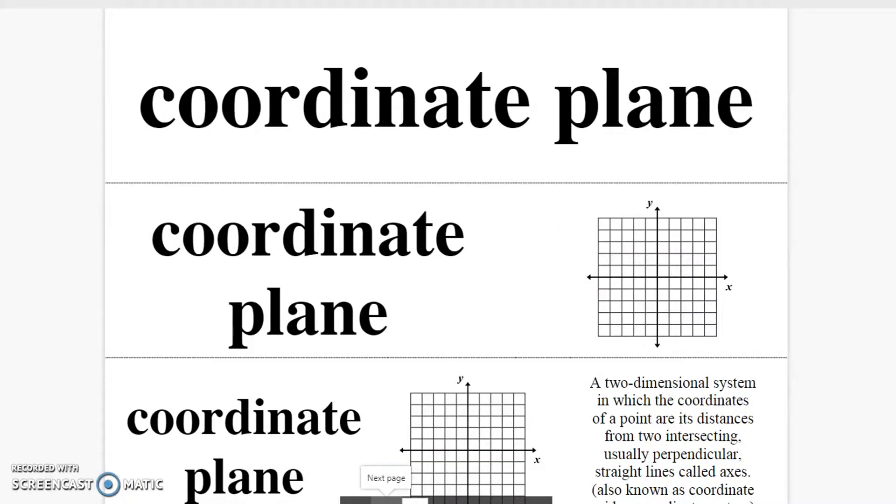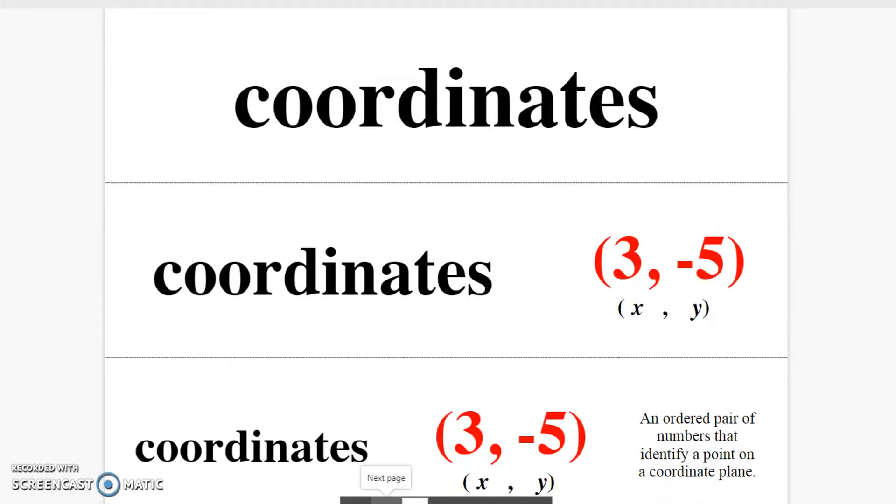Coordinate plane. A two-dimensional system in which coordinates of a point are its distances from two intersecting perpendicular straight lines. Coordinates. An ordered pair of numbers that identify a point on a coordinate plane.